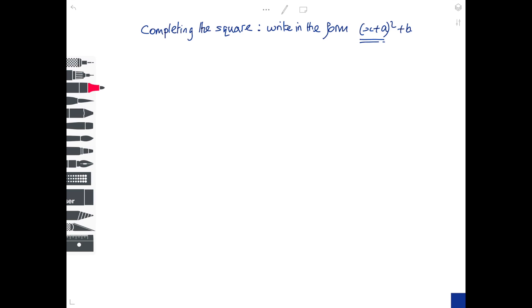For example, the question might say write x² + 10x + 33 in the form (x+a)² + b. First thing to do is to consider these two terms. You're going to write those two terms into a bracket which is squared.